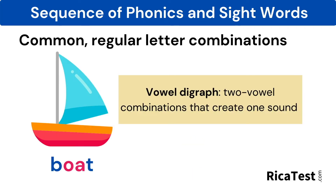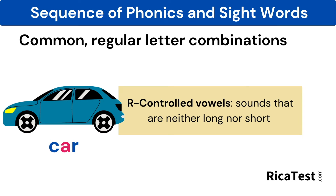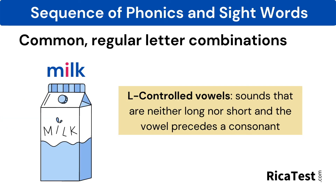Vowel digraphs are two vowel combinations that create one sound, such as the O-A combination in boat. Diphthongs are the glided sounds made by vowel combinations, such as the O-I in oil or the O-U in about. R-controlled vowels are sounds that are neither long nor short, such as in the word car, and are controlled by the R. L-controlled vowels are vowel sounds that are neither long nor short, and the vowel precedes a consonant, such as the I in milk.